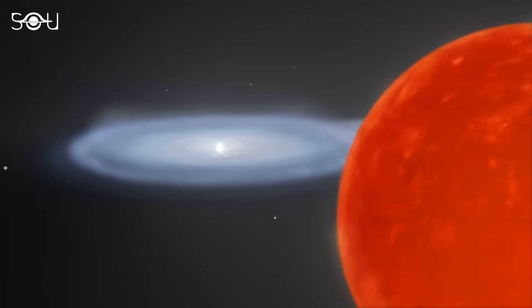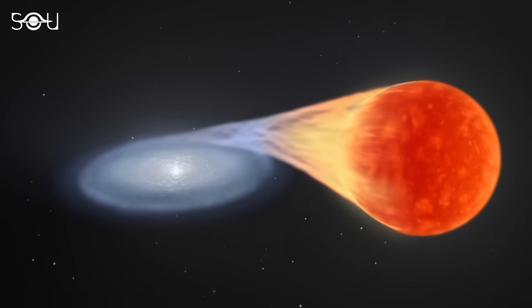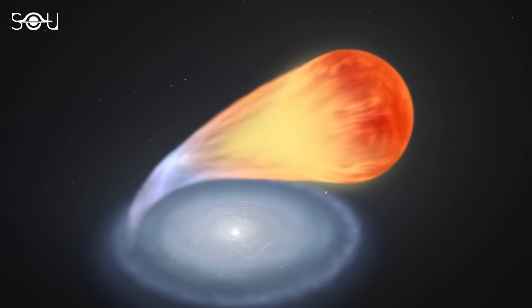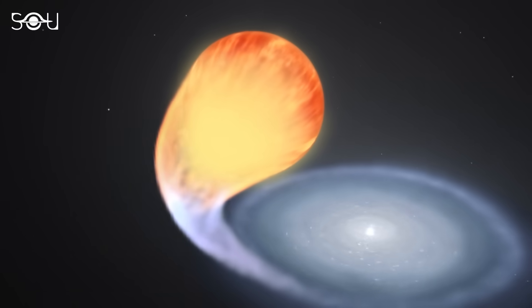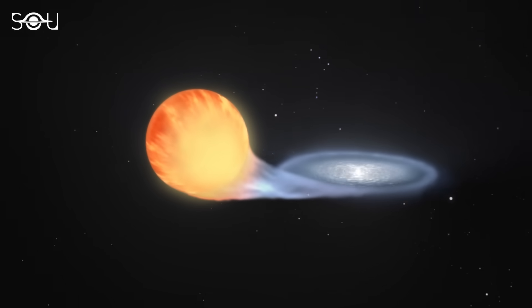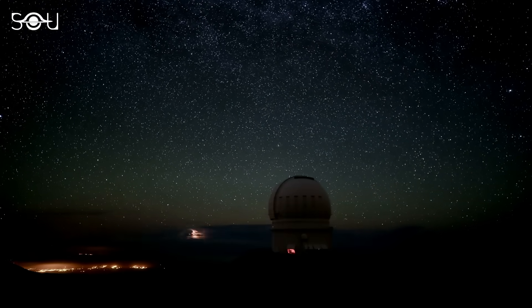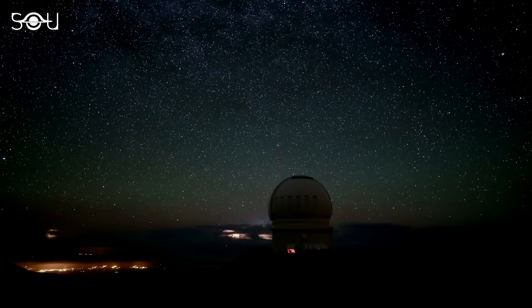A Type Ia supernova occurs when a white dwarf, feeding upon its companion, undergoes a runaway fusion, eventually exploding into a supernova. Such supernovae explosions are exceptionally bright, making them excellent standard candles to calculate longer distances.